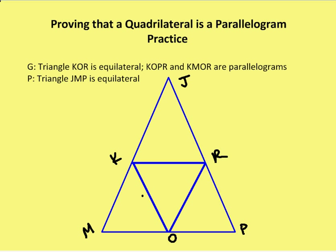I have triangle KOR, which we'll mark up in just a second. KOR is equilateral. KOPR and KMOR are parallelograms. We want to prove that triangle JMP is equilateral.